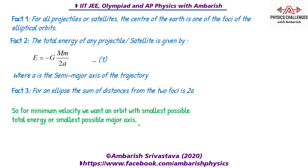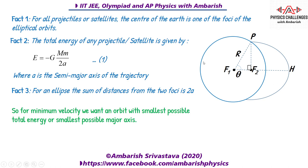Now look at the geometry — it's very beautiful. Here is our Earth, and P is the point where the projectile lands. Since the trajectory is symmetric, you can equivalently throw from south to north or north to south. The center of Earth is focus F1, so the distance PF1 = R. We need to minimize PF1 + PF2 = 2a by choosing F2 on the line F1H, which is the axis of symmetry of the trajectory. For the smallest possible semi-major axis, F2 must lie on the line F1H. Then PF1 = R and PF2 = R sinθ.